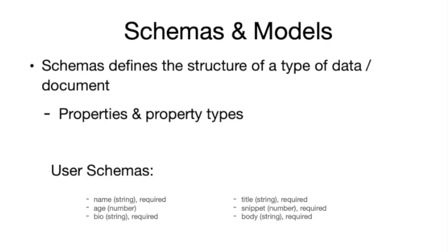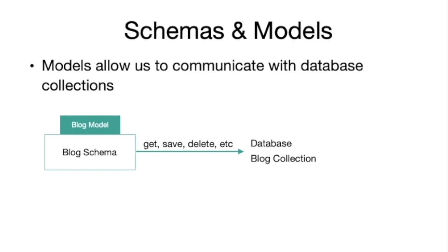We make a model to represent a data resource, but in Mongoose we make a schema first. The schema defines the structure of a data type or document stored in a database collection. It describes what properties it should have and the type of those properties. For example, a user data type might have a username, bio, and age. In our case we are working with blocks, so we'd have a schema for a block with three properties: title, snippet, and body, plus an auto-generated ID property. All properties will be of type string and all fields will also be required.